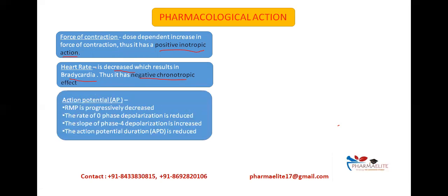Next is its effect on the action potential. Digitalis decreases the resting membrane potential (RMP) from normally around -90 mV to around -70 mV, progressively making it less negative with increasing dose, thereby enhancing excitability even at low doses. The rate of phase zero depolarization is reduced, the slope of phase four depolarization is increased, and the action potential duration is also reduced.